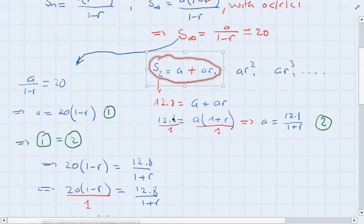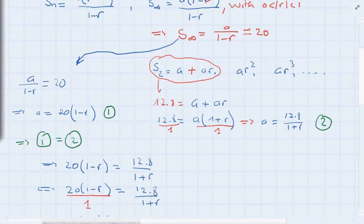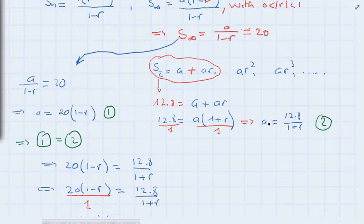So we have 12.8 equals a plus a times r. We factorize a to get a times (1 plus r) equals 12.8. Cross-multiplying gives us our second equation: a equals 12.8 divided by (1 plus r).